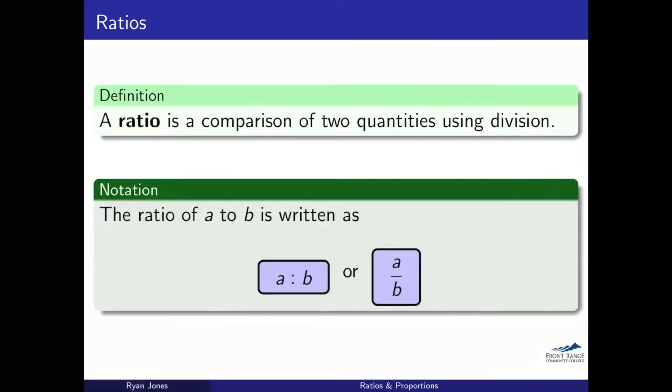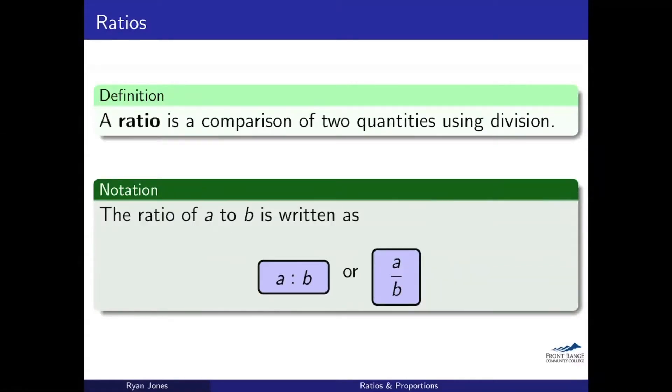So starting off with the definition of a ratio. A ratio is just a comparison of two quantities. That's really all it is, and most of the time we use division in this as well. You see this a lot in recipes, one part salt, two parts pepper, and that gives you kind of a ratio of how much you're using between each of them. We see it in a lot of places.